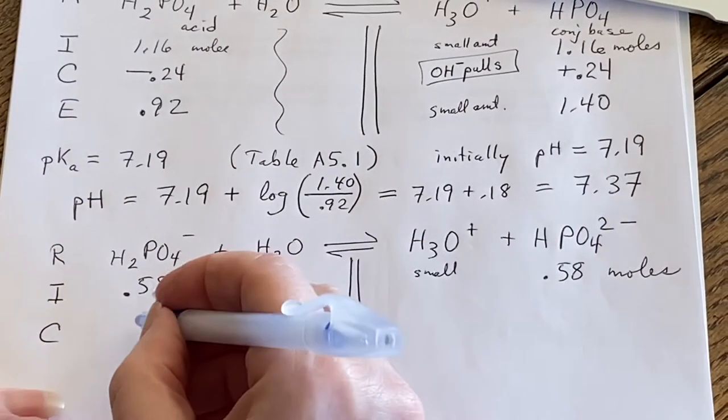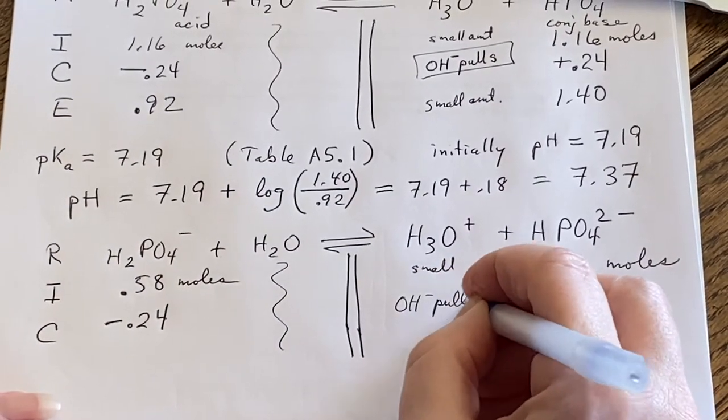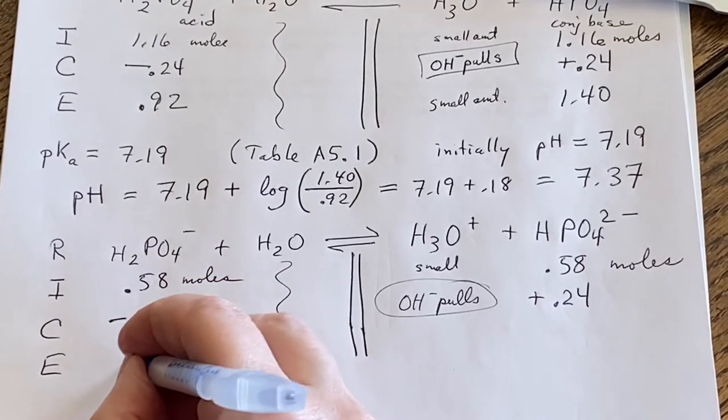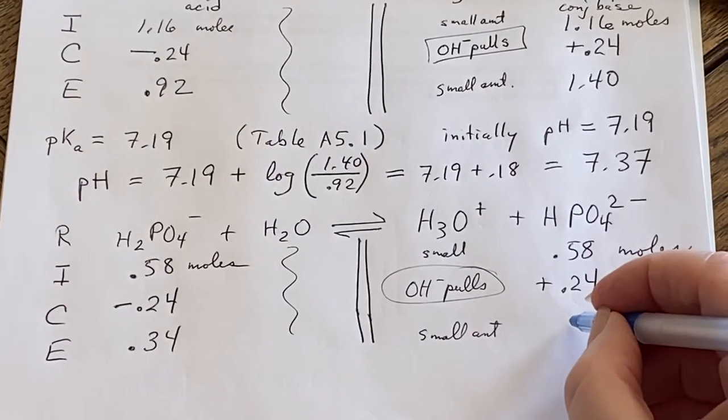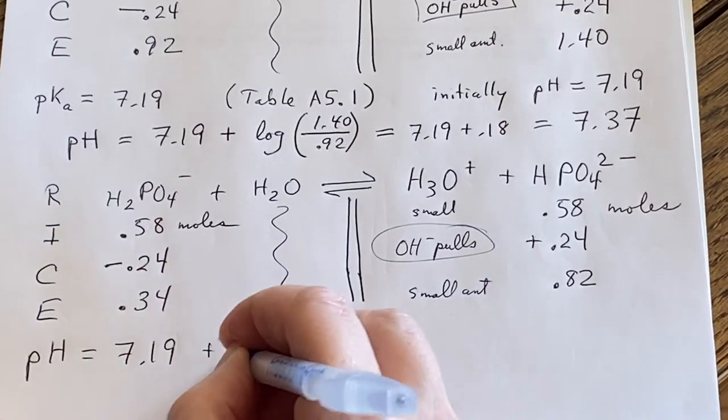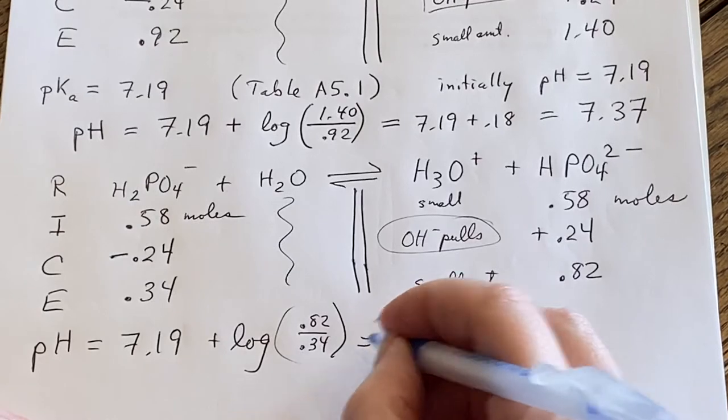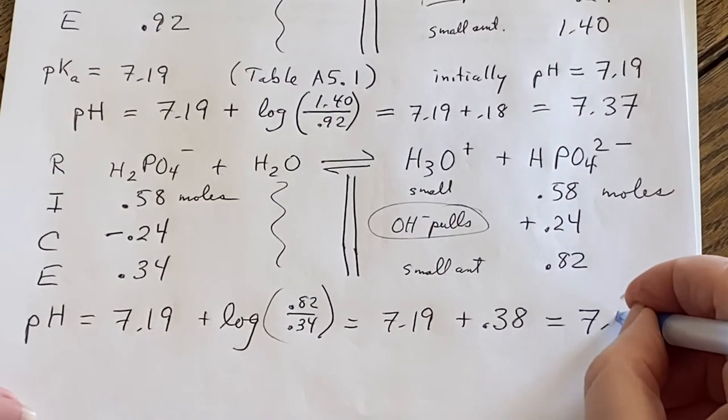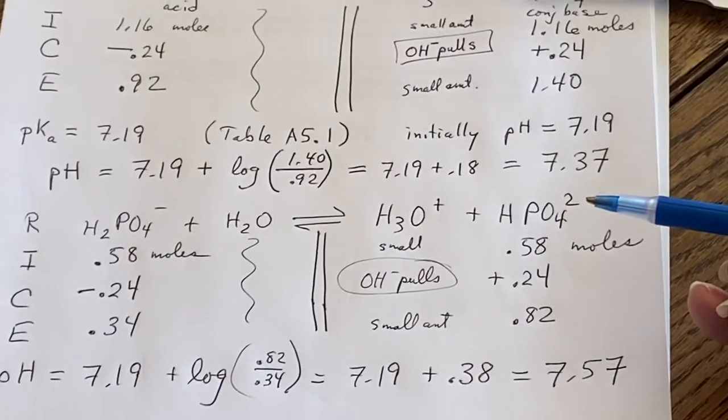But in this case, when I add, well, actually on this side, I'm making this fall apart, right, because the OH minus is pulling it this direction. This will be added here, and when I do the equilibrium, my numbers are going to be different. I'm going to have a 0.34 here. I'm going to have some small amount here, and I'm going to end up with 0.82 here. When I do Henderson-Hasselbalch on this, it's still the 7.19, and I'm taking the logarithm, but now it's of 0.82 over 0.34. And when I do that, I end up adding 0.38, and I end up with a higher pH, even though I added the same number of moles of hydroxide.